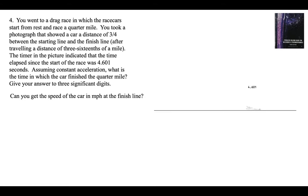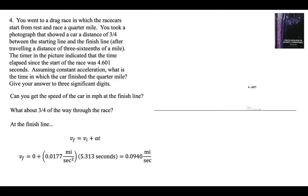So let's get the speeds. What's the speed of the car in miles per hour at the finish line? How about three-fourths of the way through the race? At the finish line, V final equals V initial plus AT. We know the initial speed is zero. We have the acceleration. We have the time. And we can get the speed.